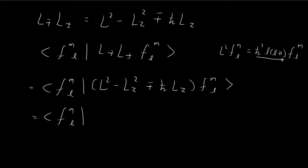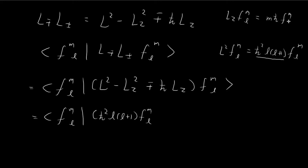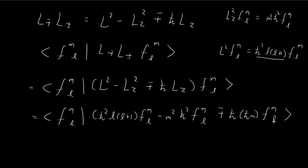For the L² term applied to F_ml, by definition this gives the eigenvalue ℏ²L(L+1) times F_ml. For the Lz² term, we first apply Lz to F_ml giving MℏF_ml, then apply Lz again giving M²ℏ²F_ml. So the Lz² term contributes −M²ℏ². For the ∓ℏLz term, applying Lz to F_ml gives MℏF_ml, so this term becomes ∓ℏ · Mℏ = ∓Mℏ².